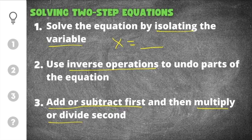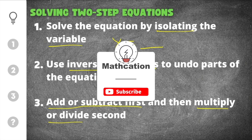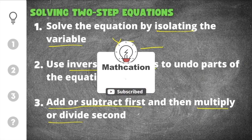You are adding or subtracting to get the constants — just the numbers — together, and then multiplying or dividing to get the variable by itself. Don't forget to subscribe so you don't miss out on other helpful math videos.